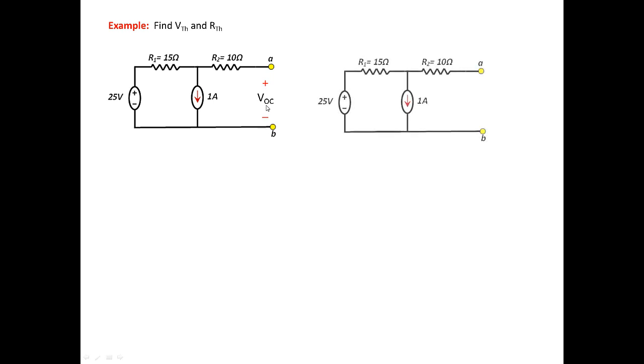We do that in two steps. The first step is to find VOC, which is the voltage across this network. In the second step, we're going to short circuit the terminal A to B and evaluate that short circuit current. Once you evaluate the short circuit current and VOC, you need to find R Thevenin, which is VOC over I short circuit.